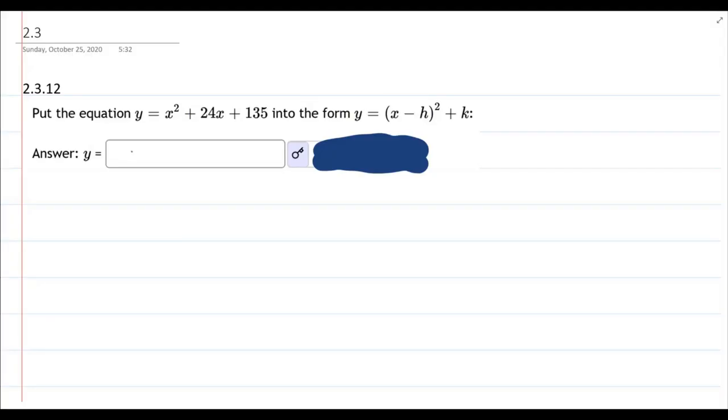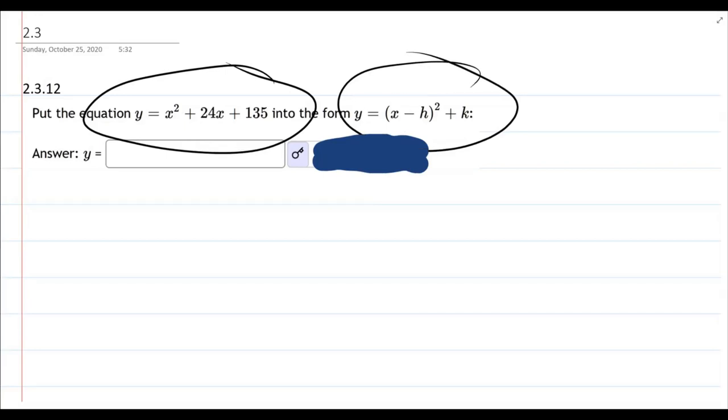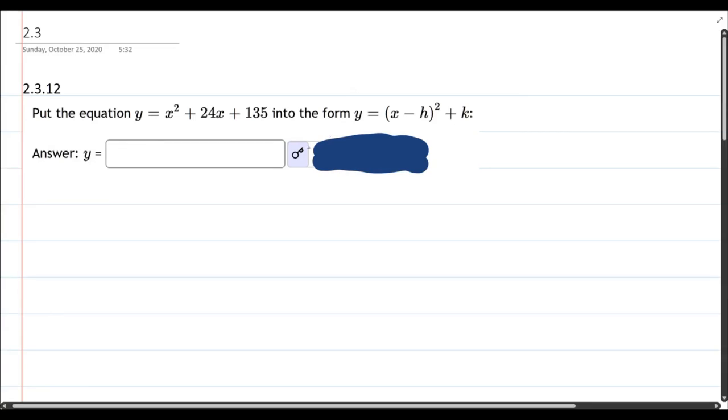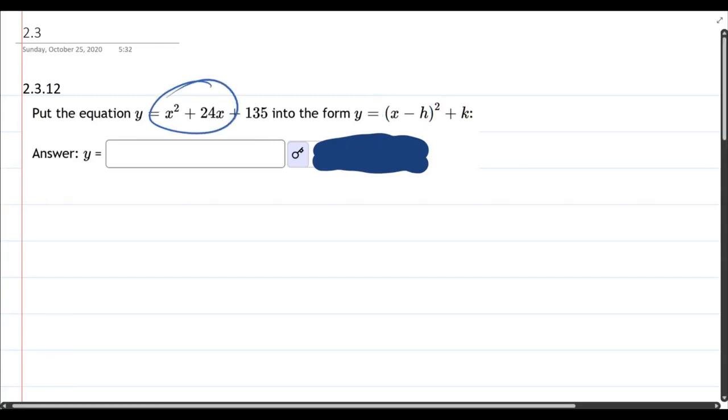In this problem, we're going to turn this quadratic into this form. And what's the difference between the two? Well, basically, if you look at the second form, it's x minus h, and h is going to be a number, x minus number squared plus k. And the first one, we have x appearing twice.